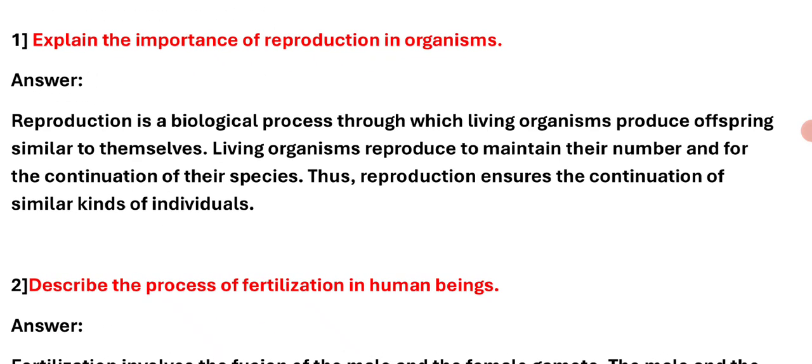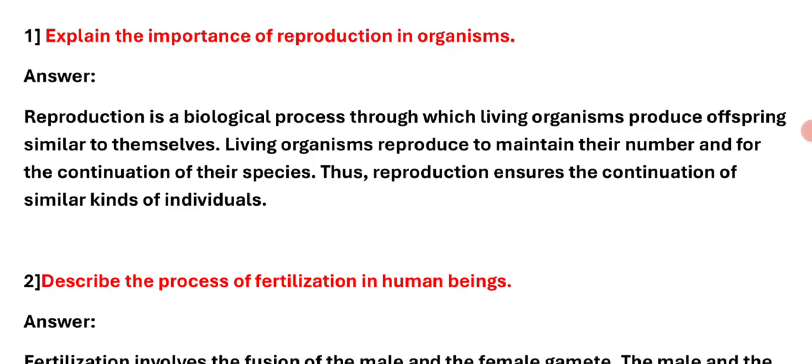First question: Explain the importance of reproduction in organisms. Answer: Reproduction is a biological process through which living organisms produce offspring similar to themselves. Living organisms reproduce to maintain their numbers and for the continuation of their species. Thus, reproduction ensures the continuation of similar kinds of individuals.